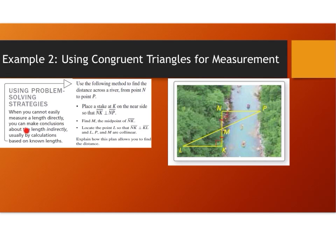Explain how this plan allows you to find the distance — keep in mind you cannot easily measure a length directly. You can make conclusions about the length indirectly, usually by calculations based on known lengths. We figure out known lengths on the same side of the bank of the river to indirectly find measurements across the river that we can't physically measure.